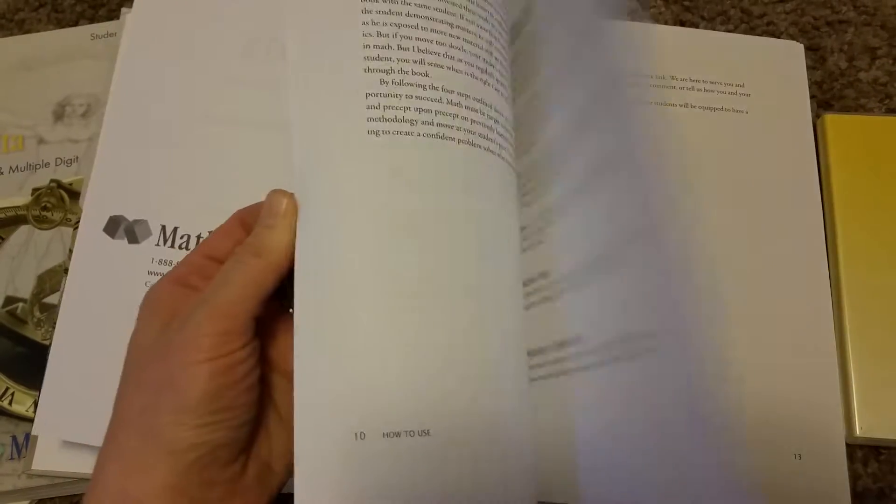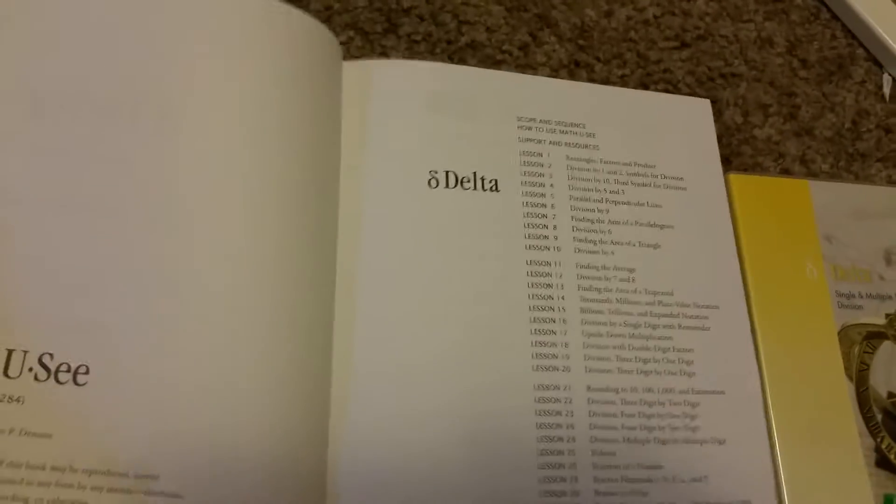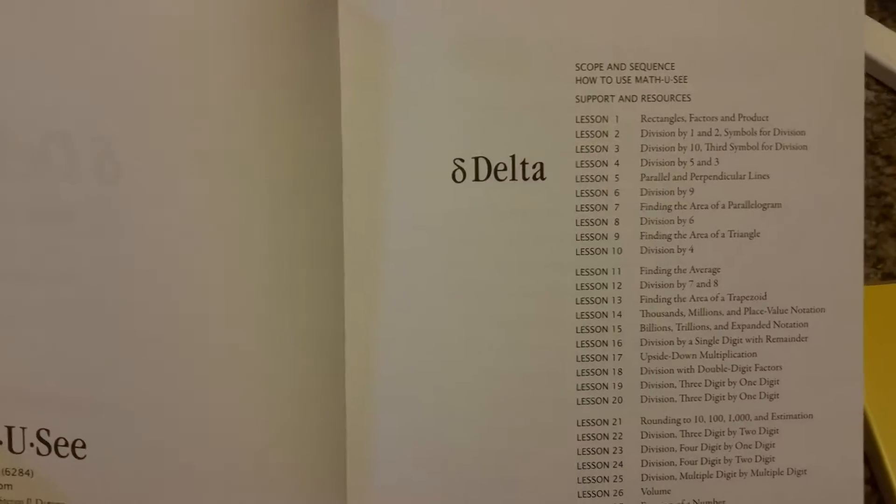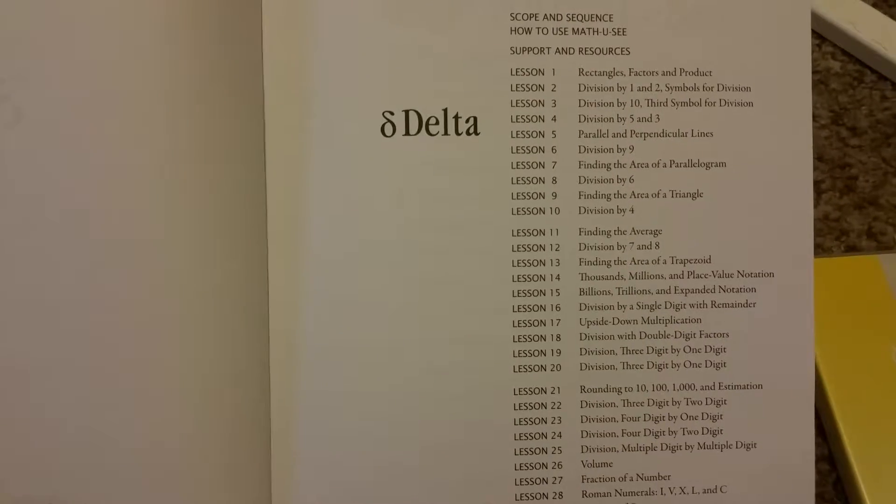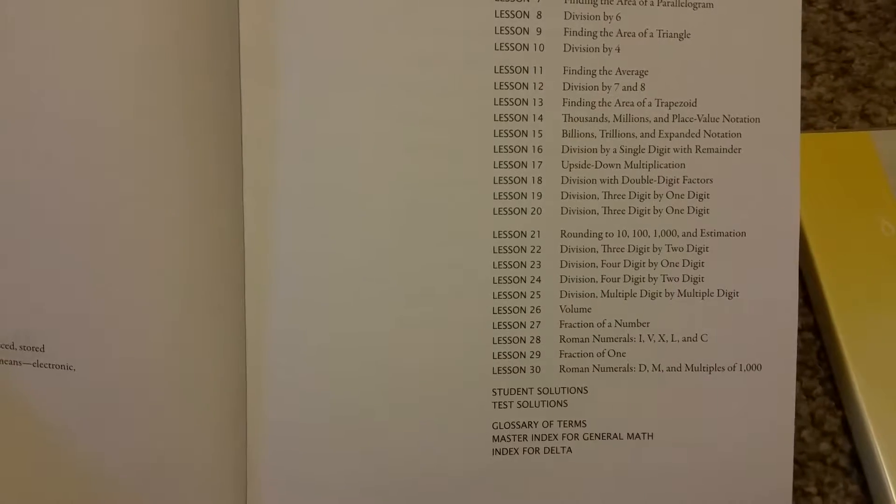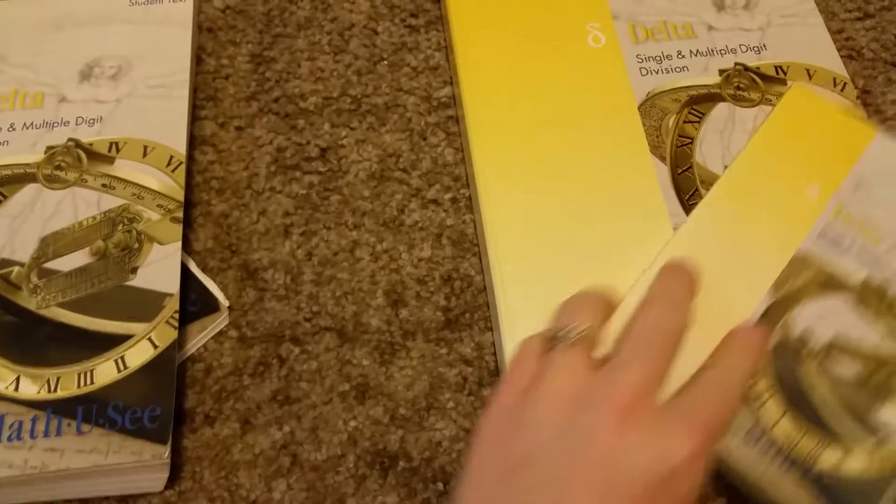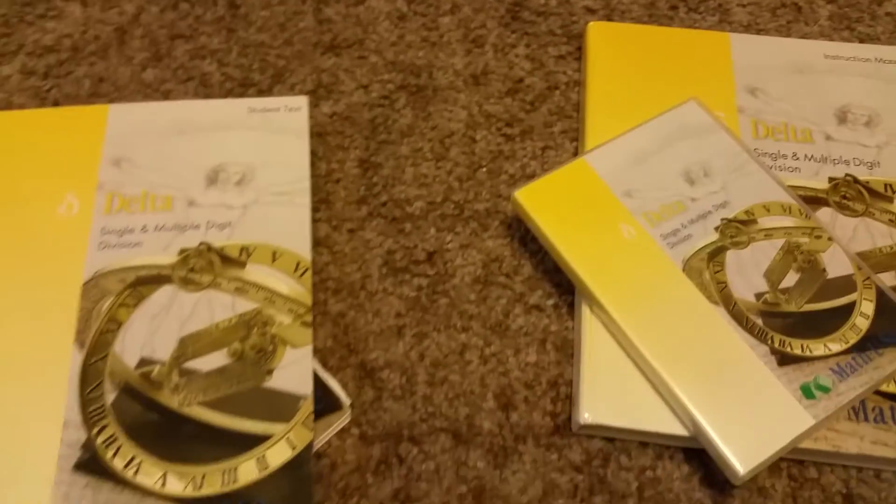I think it has the table of contents in this one right here. So this is what you're going over in Delta. You're doing single multiple digit division. So you're working your way up.